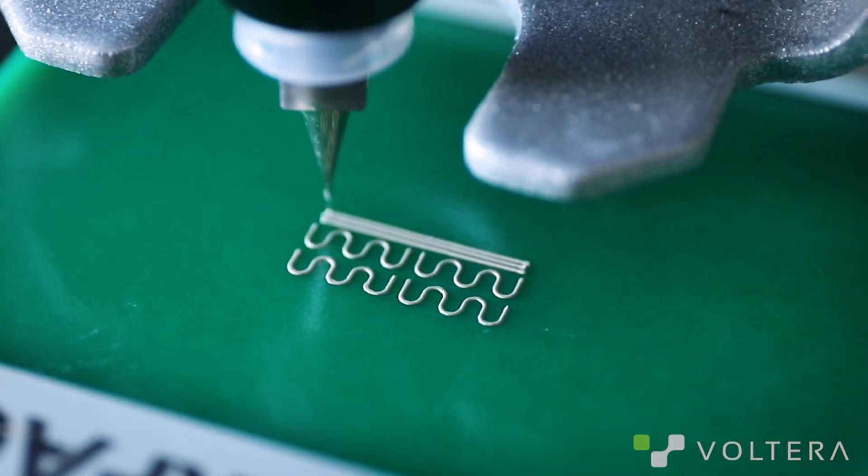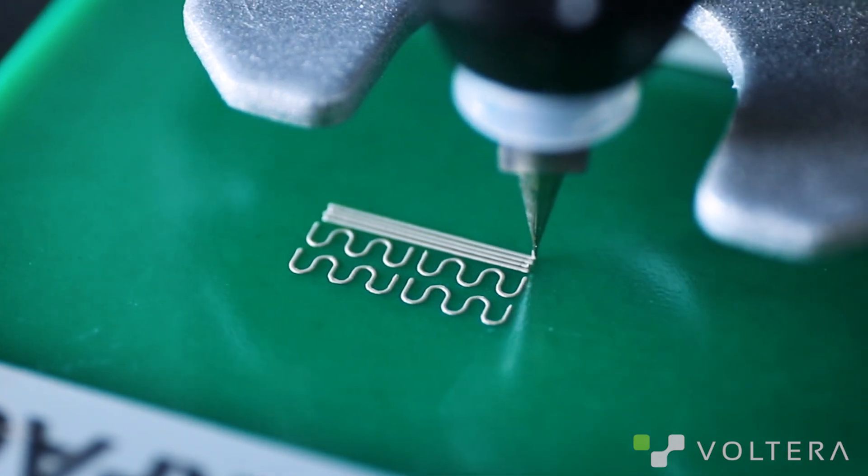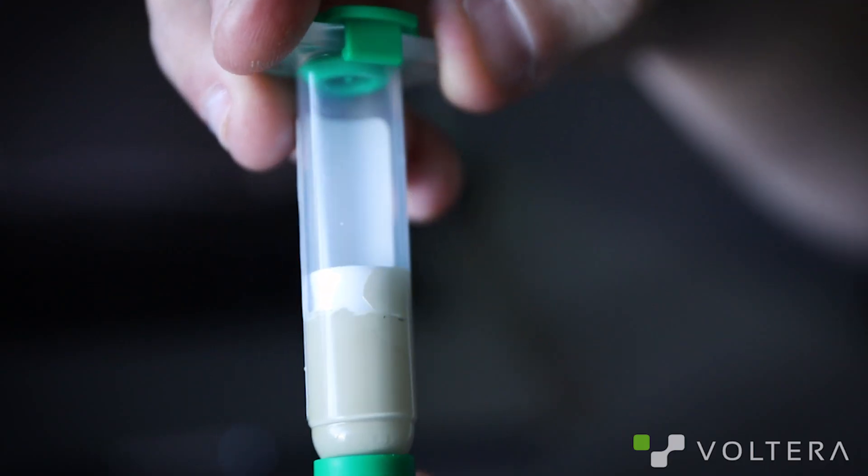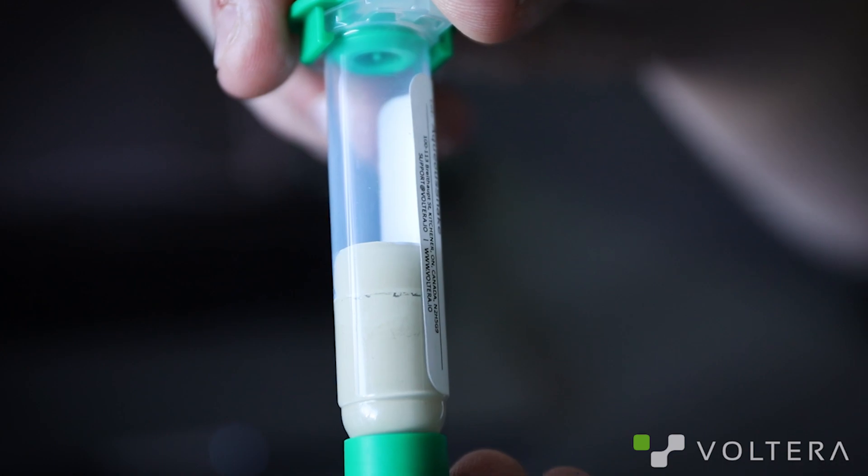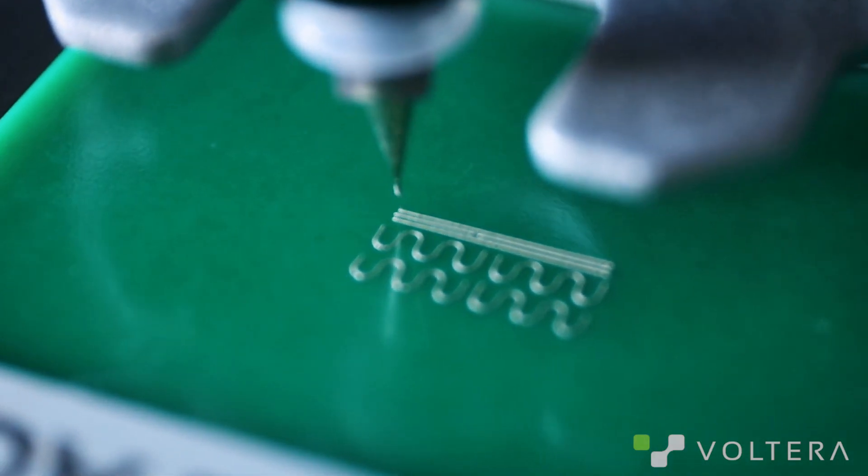Ink pressure is the amount of force the piston exerts on the ink during printing. Too much pressure will mean shorts and maybe a pierced cartridge. Not enough pressure means open circuits.